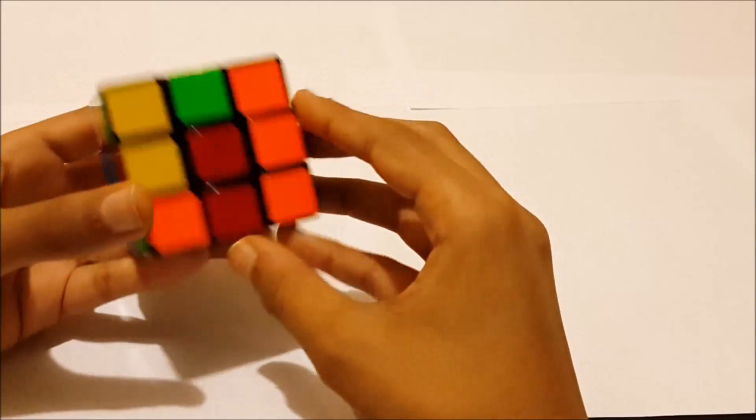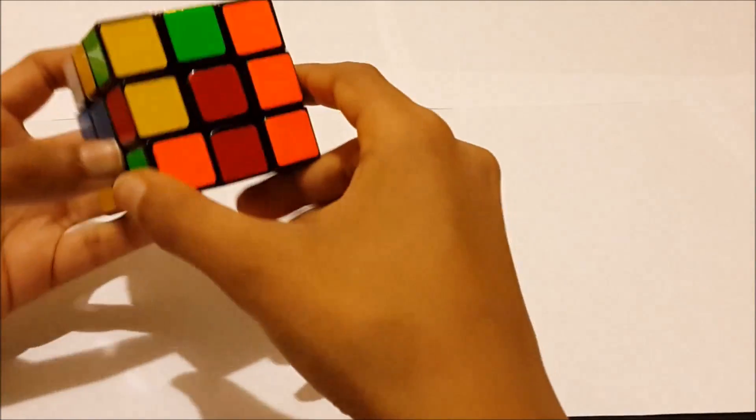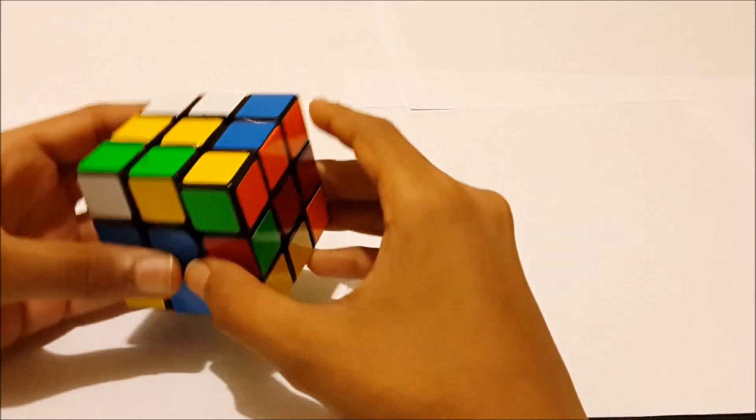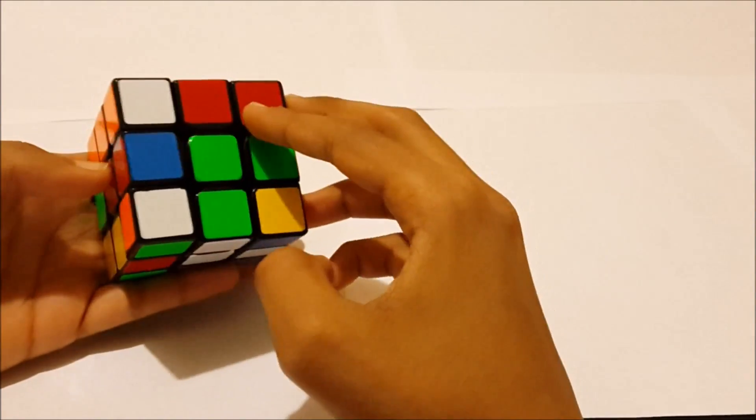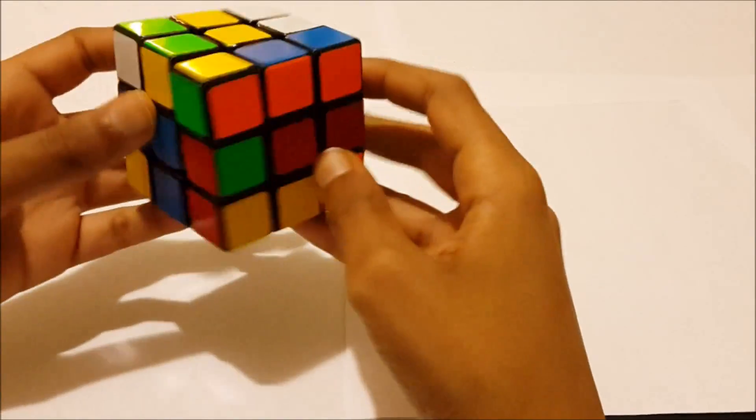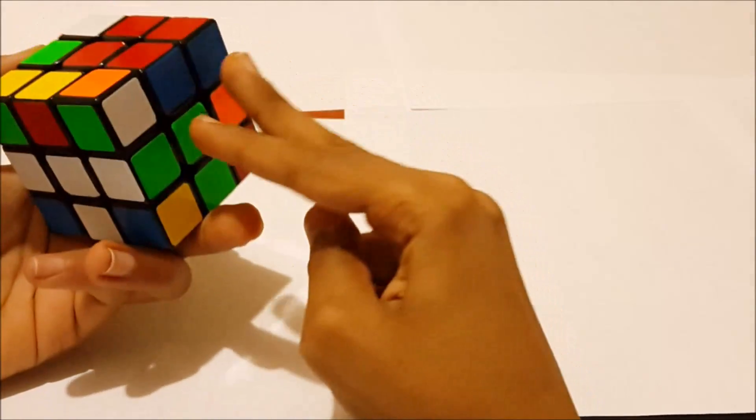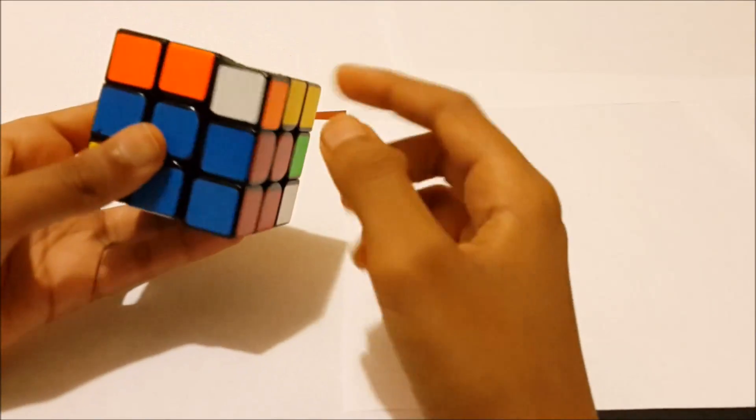And what you're doing next is bringing up this edge to here. And then you're going to realign this corner with its edge over here. And you'll see that it's paired up. And then you can just do an R2 to put it in.